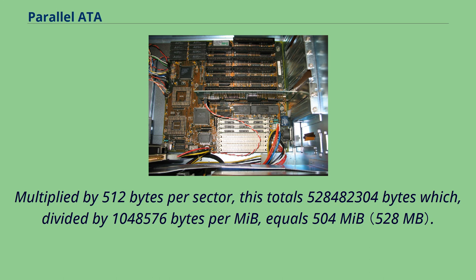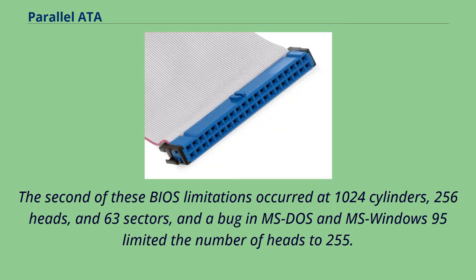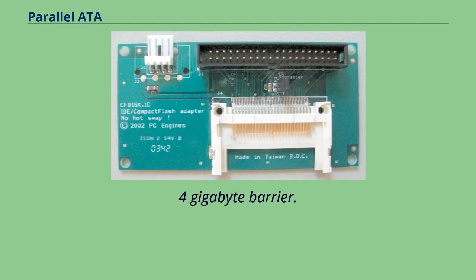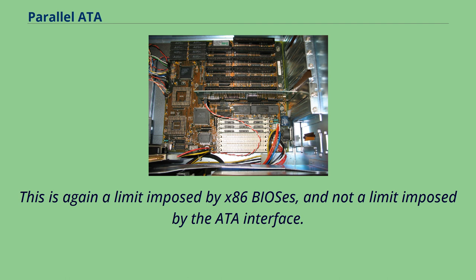The second of these BIOS limitations occurred at 1,024 cylinders, 256 heads, and 63 sectors, and a bug in MS-DOS and Windows 95 limited the number of heads to 255. This totals to 8,422,686,720 bytes, commonly referred to as the 8.4 gigabyte barrier. This is again a limit imposed by x86 BIOSes, and not a limit imposed by the ATA interface.